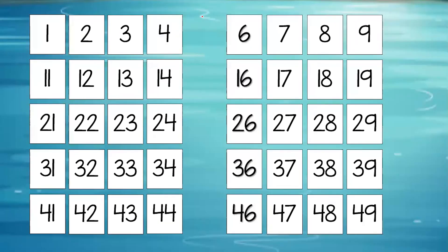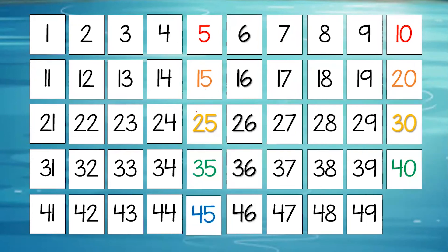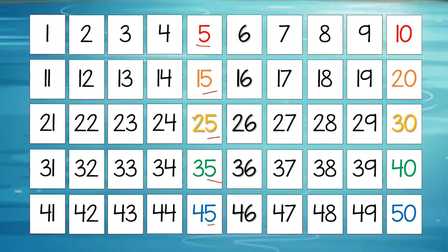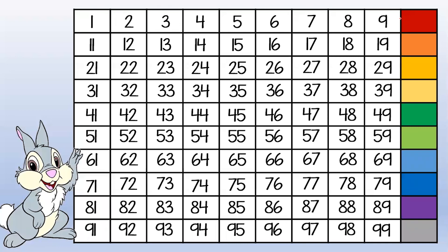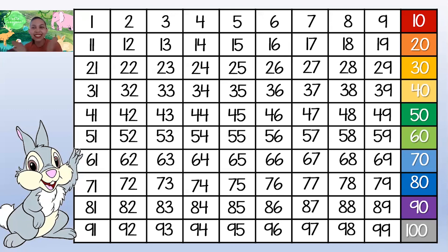Now let's go with 5! That would be 5, 10, 15, 20, 25, 30, 35, 40, 45, 50! All the numbers end with 5 or 0 — that's the pattern! Good job, everyone! Now let's skip count by 10 — it's very, very easy! 10, 20, 30, 40, 50, 60, 70, 80, 90, and 100! Good job, everybody!